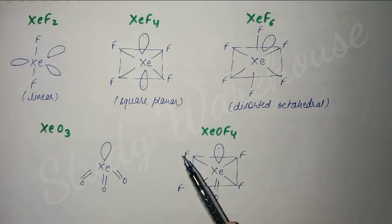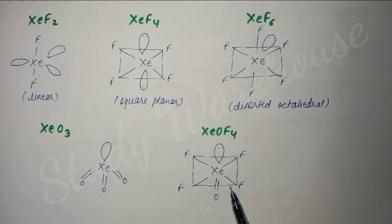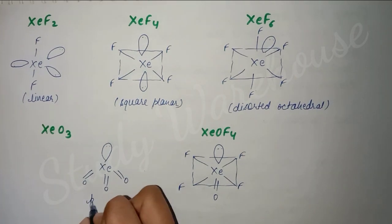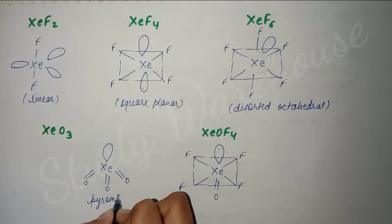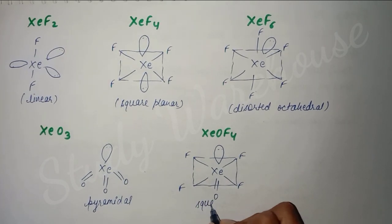In XeOF4, there are 4 fluorines first, so it bonded with 4 fluorines. It shared 2 electrons with oxygen, which means 2 remain, so we show one lone pair here. If we talk about its structure, it is pyramidal. Similarly, if we talk about XeOF4, it is square pyramidal.